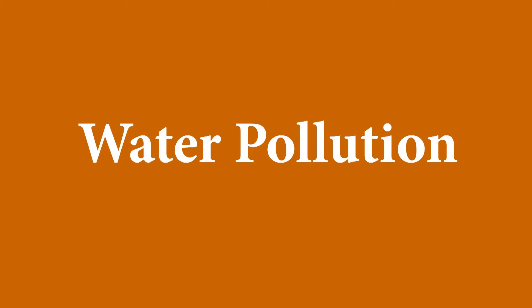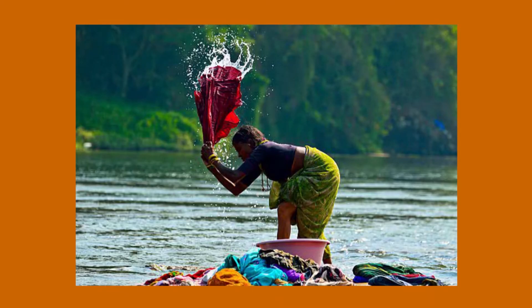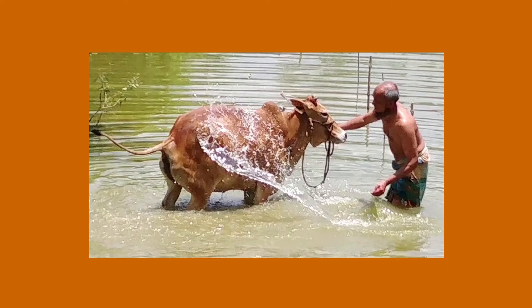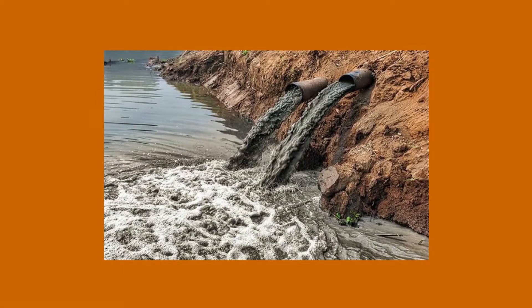Water pollution is a serious problem today. Some activities that cause water pollution are: bathing and washing clothes and utensils in water bodies, bathing animals in ponds, lakes, and rivers, and dumping waste from houses and factories into water bodies.